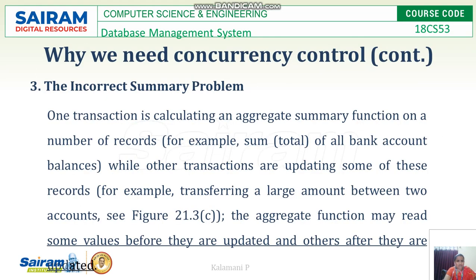The next problem is the incorrect summary problem. This occurs when one transaction is calculating an aggregate summary function on a number of records. For example, when bank staff calculate the total sum of all bank accounts while another transaction is debiting or crediting an account, the aggregate function may read some values before they are updated and some after, producing an incorrect result.